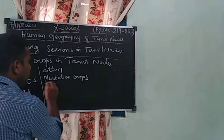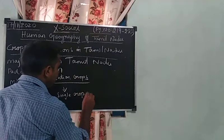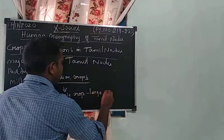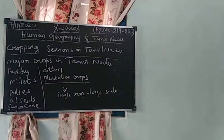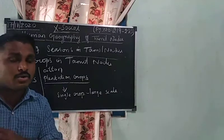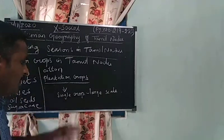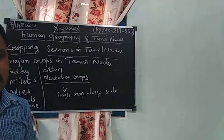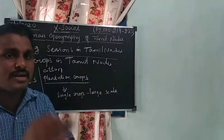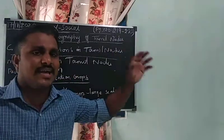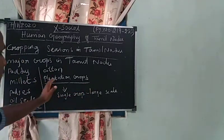Next is plantation crops. Single crop cultivated at a large scale is called plantation crops. For example, tea — you can see in mountain areas like Kodaikanal, Yercaud, Kolli Hills, and Biligiri. They cultivate tea, coffee, and rubber. Kerala is famous for rubber. Tea is a single crop but cultivated at a very large scale — more than acres.